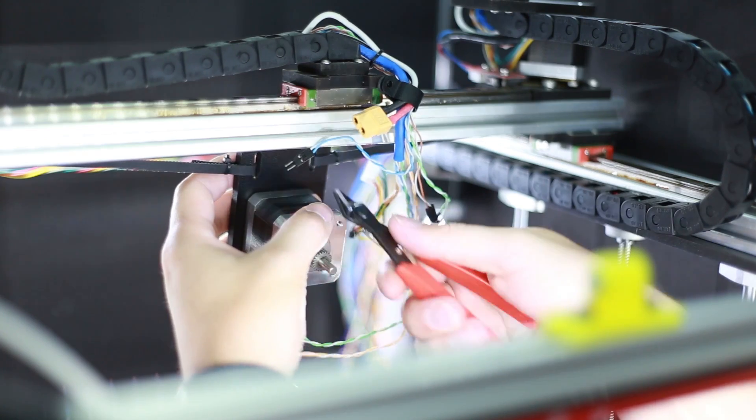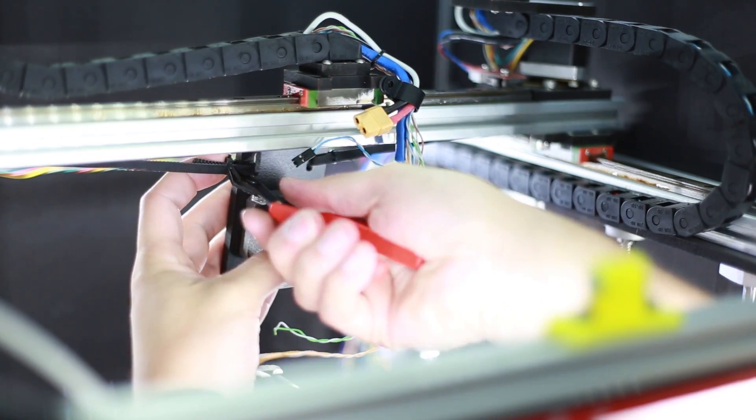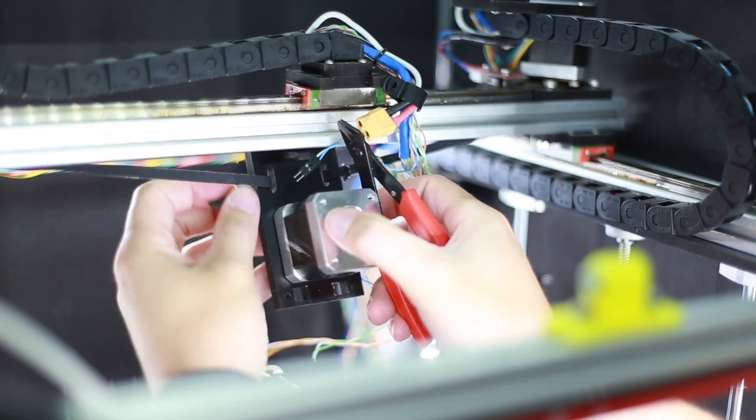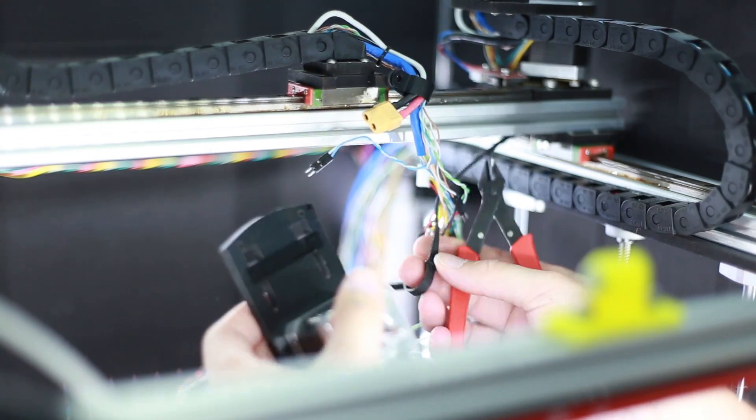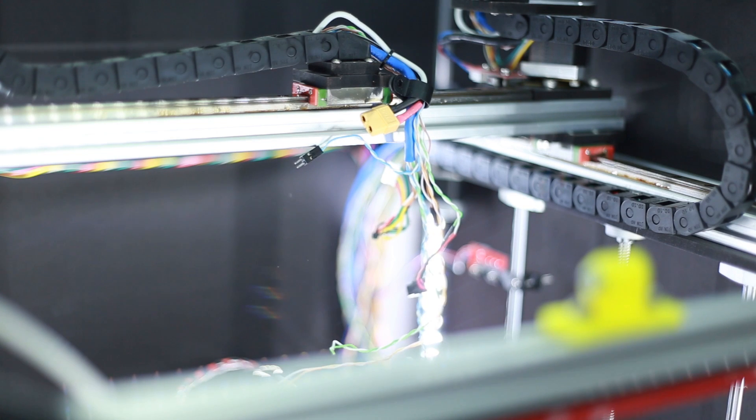Once we have it off, cut the belts, just the zip ties. That way this will come off nice and easy. One side, other side. And there it is.